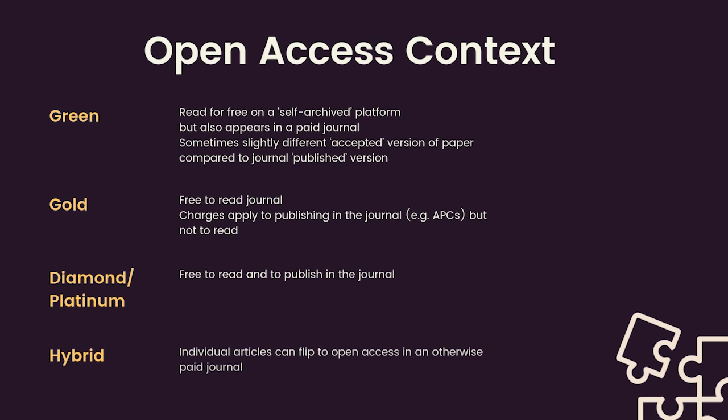Regarding open access, there are broadly two types: green and gold. With green open access, which can be read immediately without payment or any subscription, the author will self-archive their paper on a non-commercial site or repository. The article will appear in a paid journal, but you can access it freely from the archive site. Often the version will differ slightly, such as being the version accepted by a journal but not the finalised published version — just something to bear in mind. There's also sometimes an embargo period after journal publication before it appears on the archive.